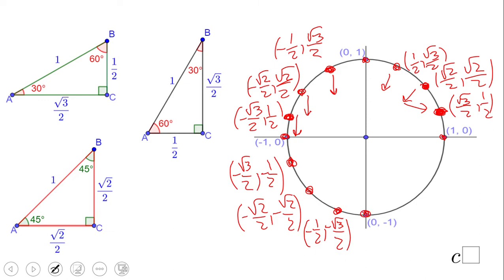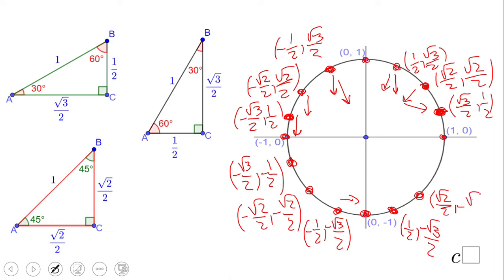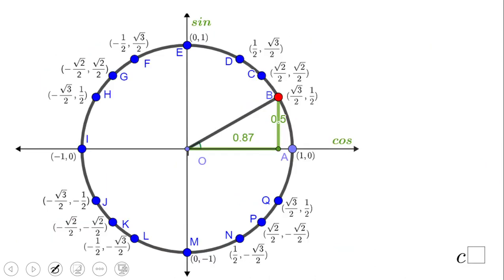Now Quadrant 4. Using reflections over the x-axis or the origin, we get (1/2, −√3/2), then (√2/2, −√2/2), and finally (√3/2, −1/2). And now we have the complete unit circle.